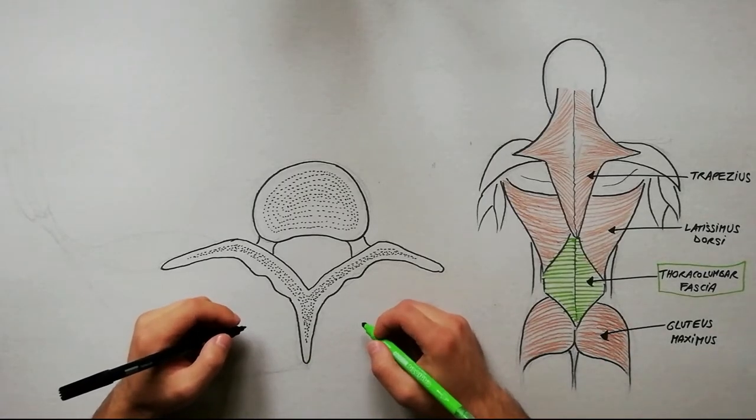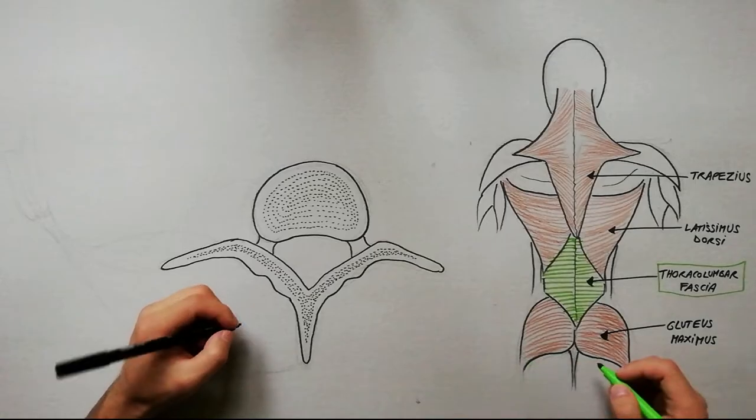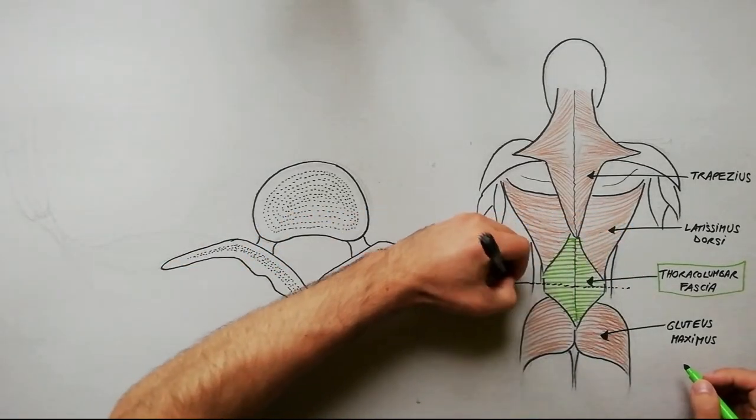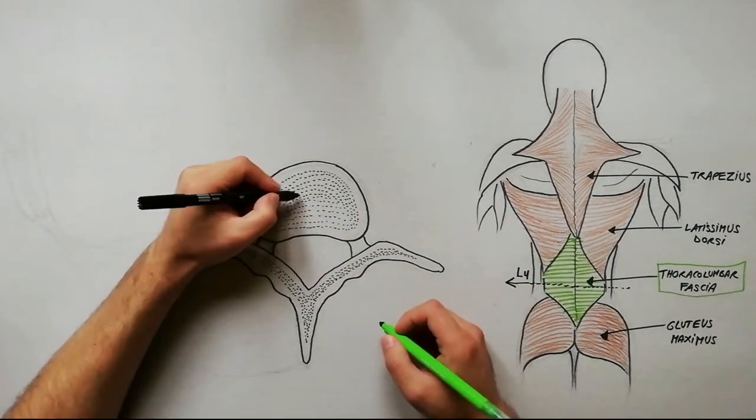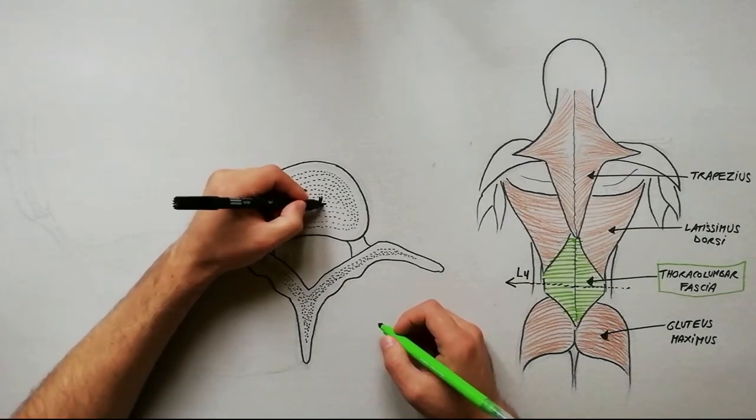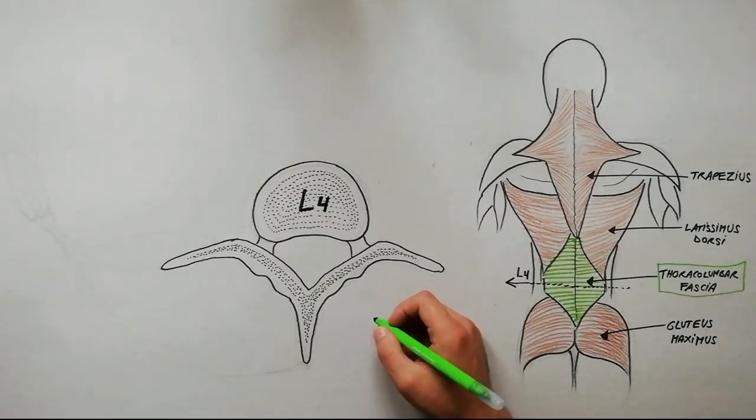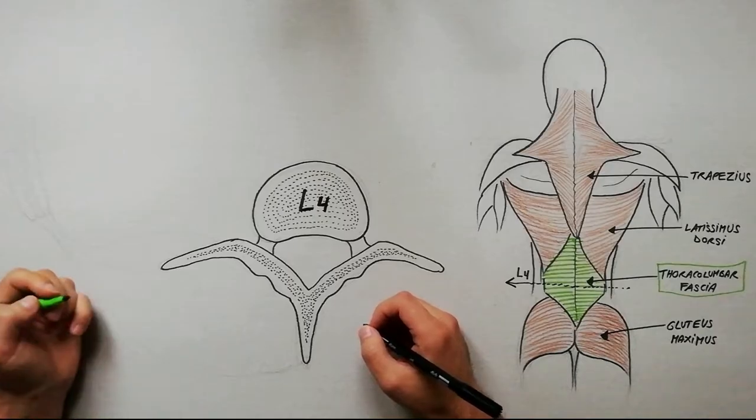To emphasize these layers we will draw a cross section through the lumbar region at the level of L4 vertebra. These three layers insert medially as follows.